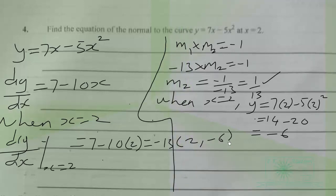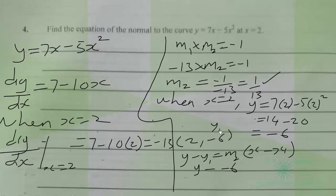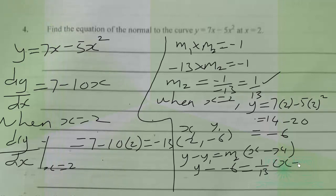Using the point-slope formula: y minus y1 equals m times (x minus x1). We get y minus negative 6 equals 1 over 13 times bracket x minus 2.